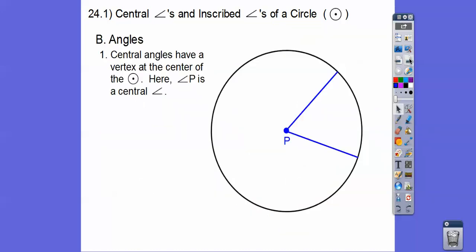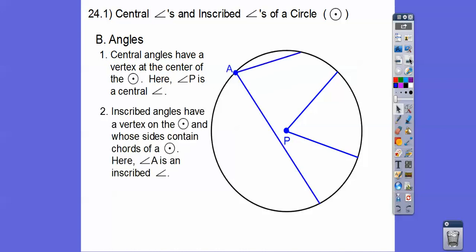So angles, you guys, this is called a central angle. If the vertex is at the center of the circle, it's called a central angle. So here, angle P is a central angle. Here's an inscribed angle. An inscribed angle is where the vertex is on the circle. So angle A is an inscribed angle.